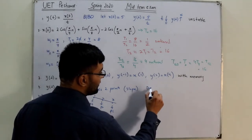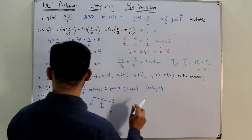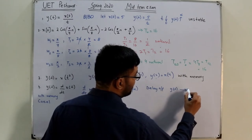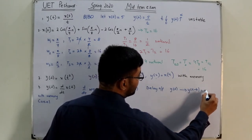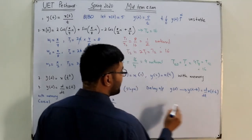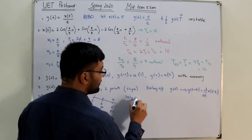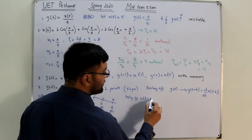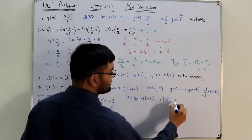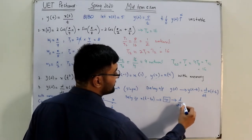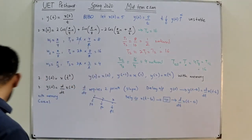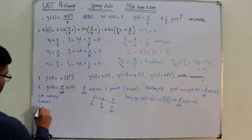For time invariance: we delay the output first, giving y(t - t₀) = derivative of x(t - t₀). Then we delay the input to x(t - t₀) and feed it to the system, which takes its derivative, also giving derivative of x(t - t₀). Both sides are identical, so this is a time-invariant system.